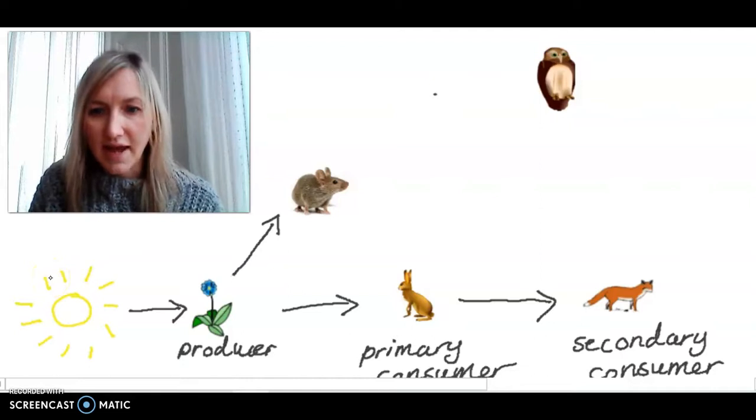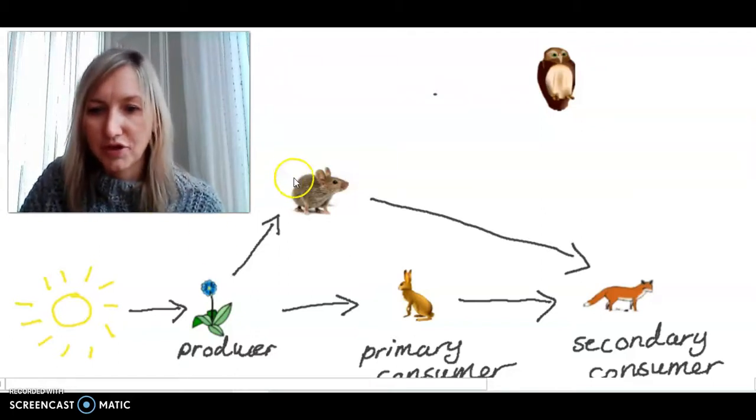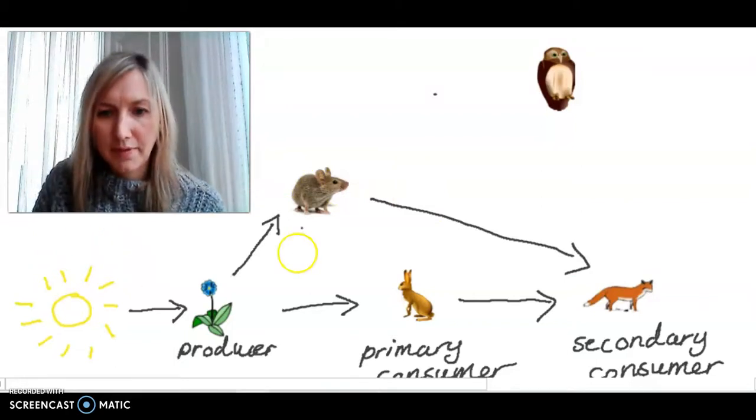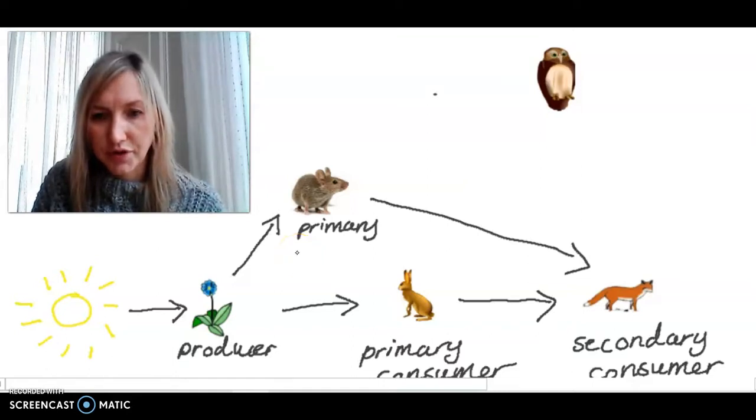Now let's think, does anyone else eat the mouse? Might the fox eat the mouse? So let's do a line from fox, from mouse to fox, showing the transfer of energy there. In this food web, the mouse is also a primary consumer as it eats the producer. So I'll label this mouse as well.